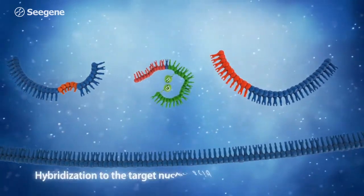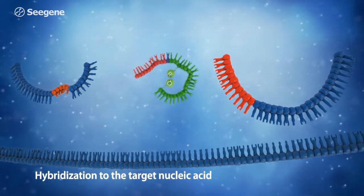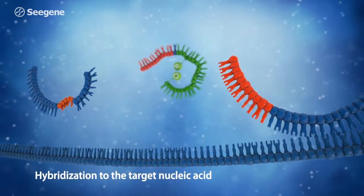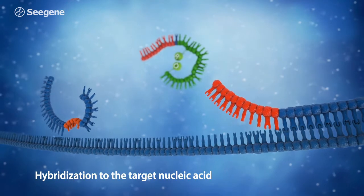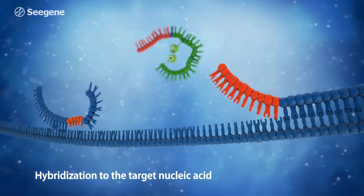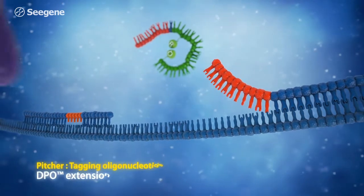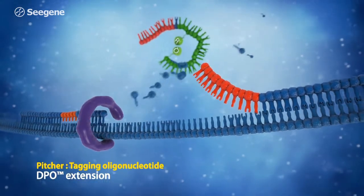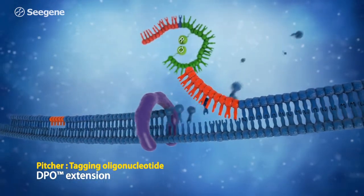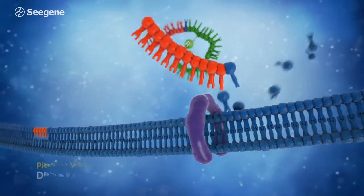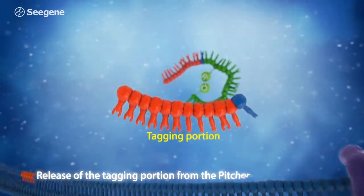The DPO Primer and the Pitcher hybridize specifically to the target sequence. The tagging portion of the Pitcher is designed not to hybridize to the target sequence. During the DPO Primer extension, the Pitcher is cleaved by the exonuclease activity of DNA polymerase and then the tagging portion is released.